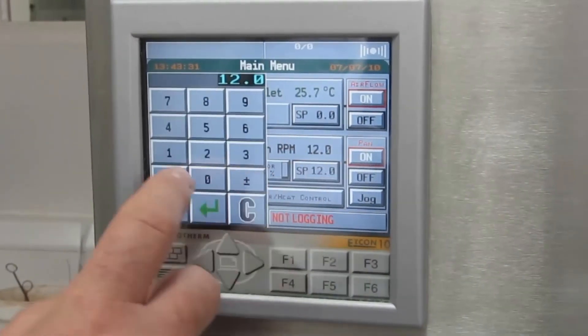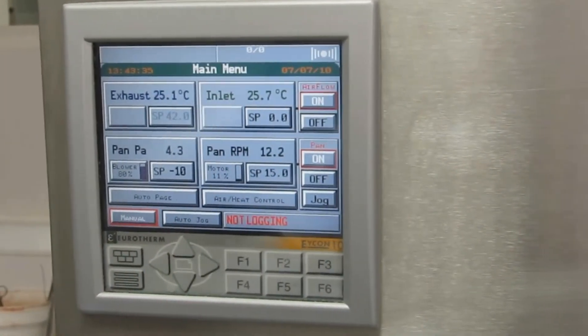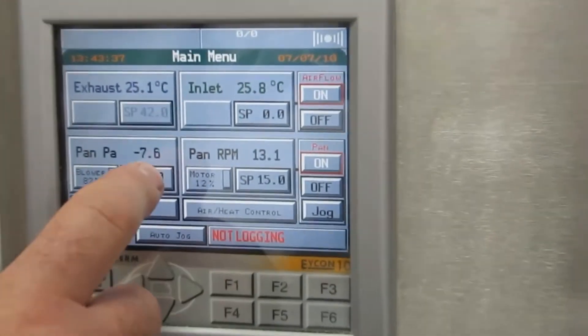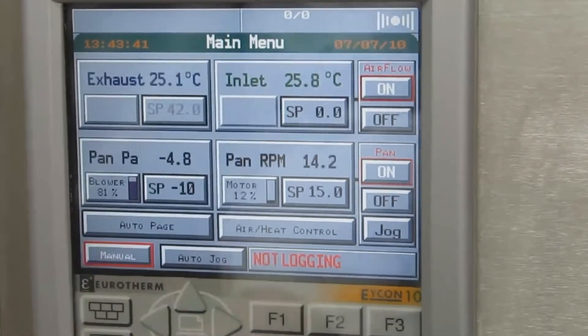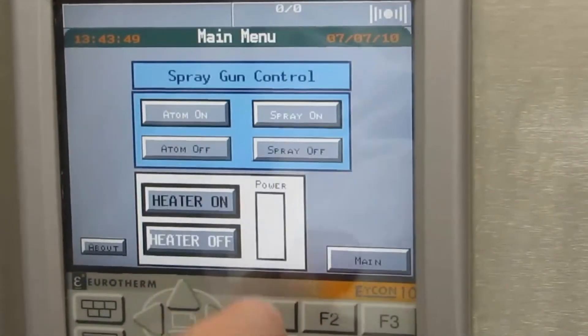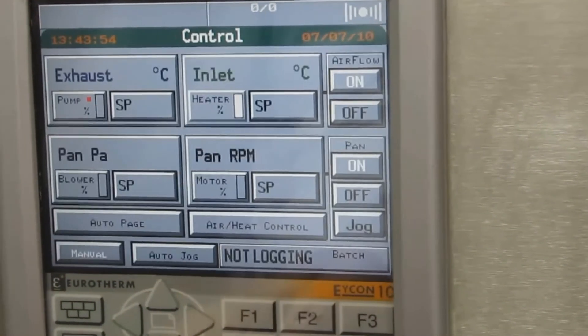Accurate process parameter control was fundamental in the design of the Pilot XT. At the heart of the Pilot XT is the ICON Visual Supervisor, which provides innovative multi-function control. Process set points can be entered prior to coating or at any time throughout the process.